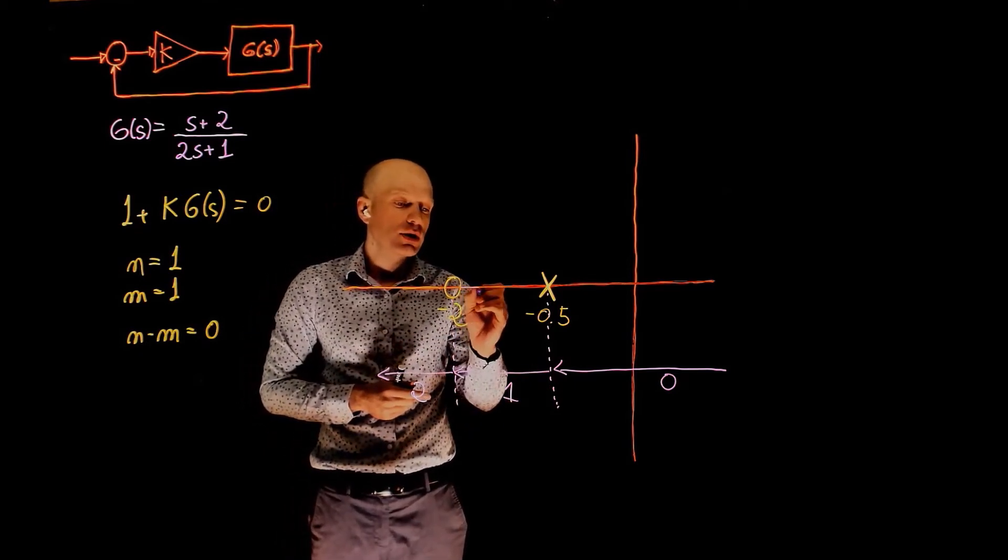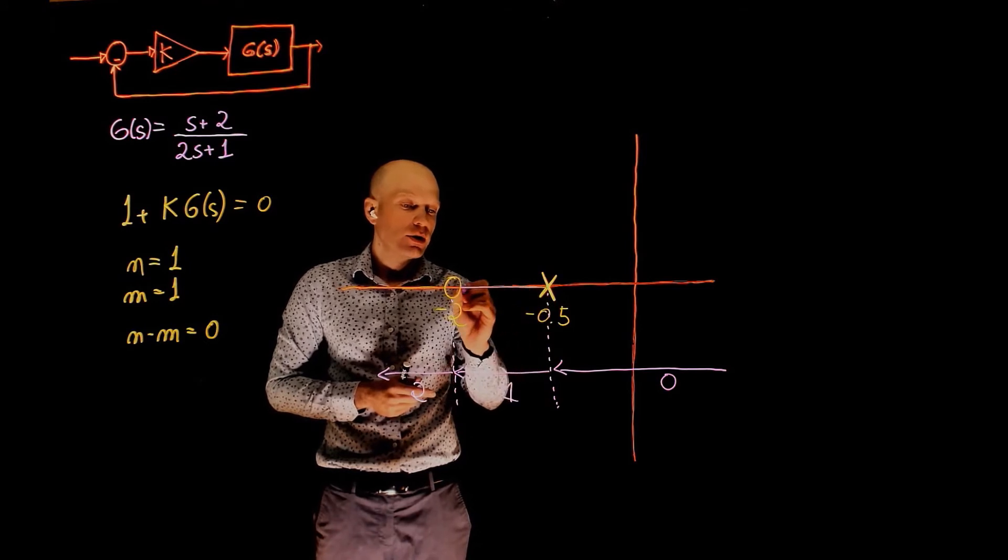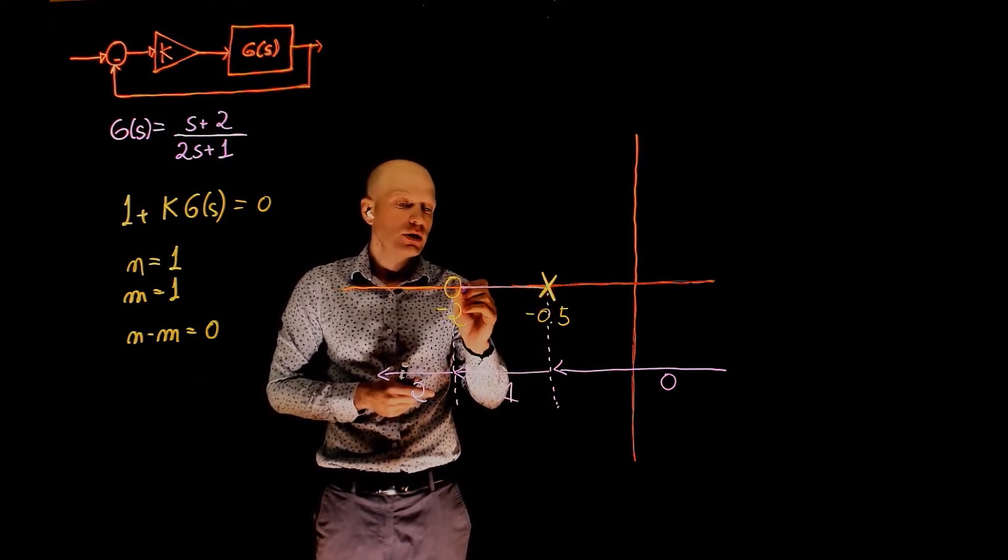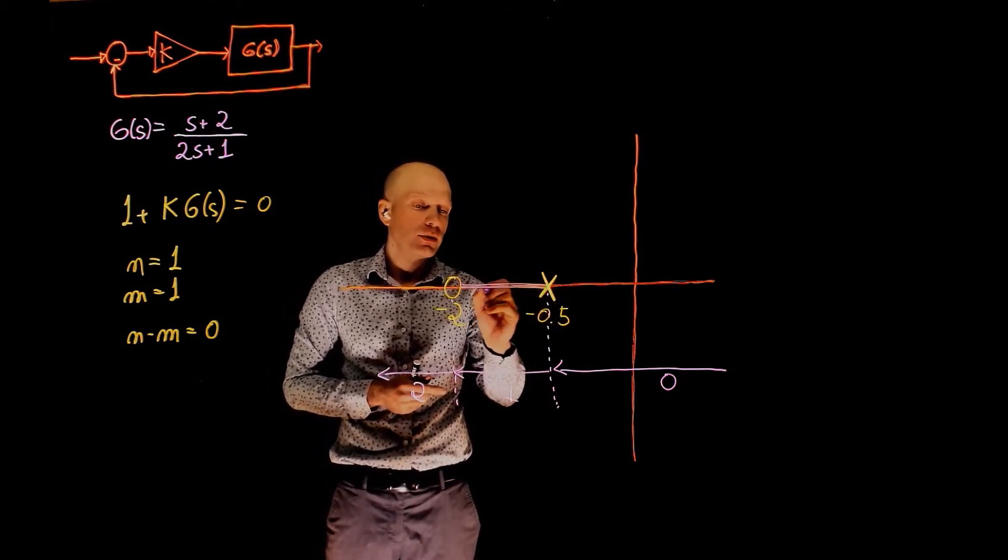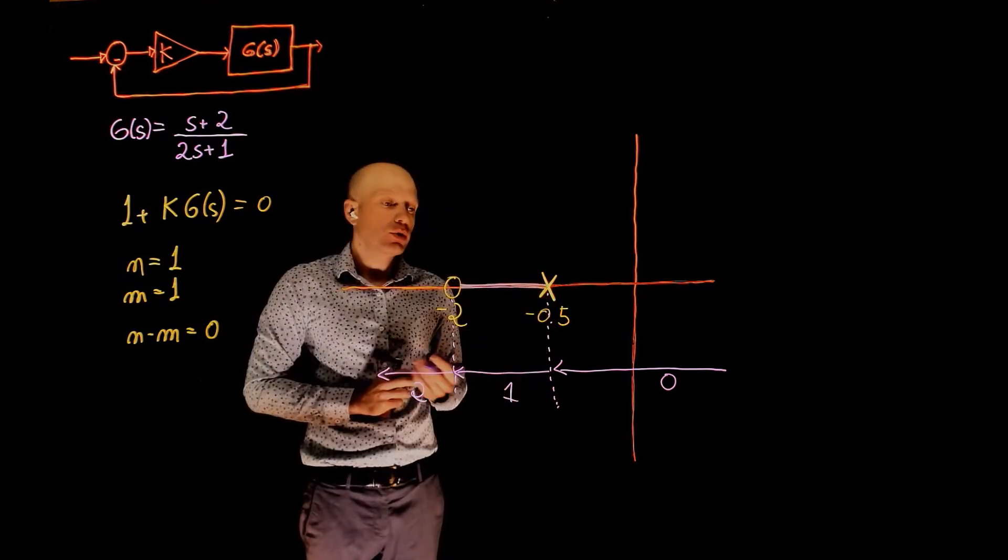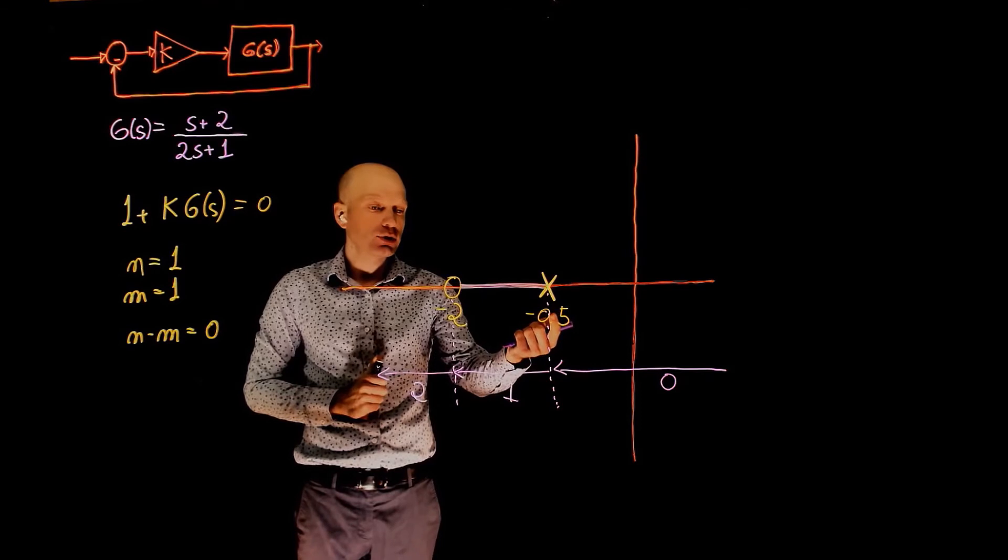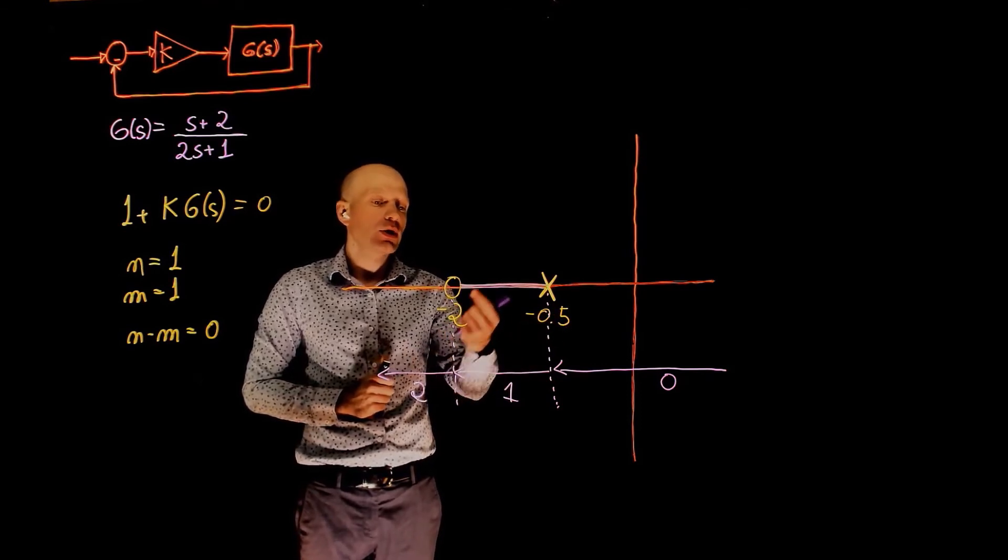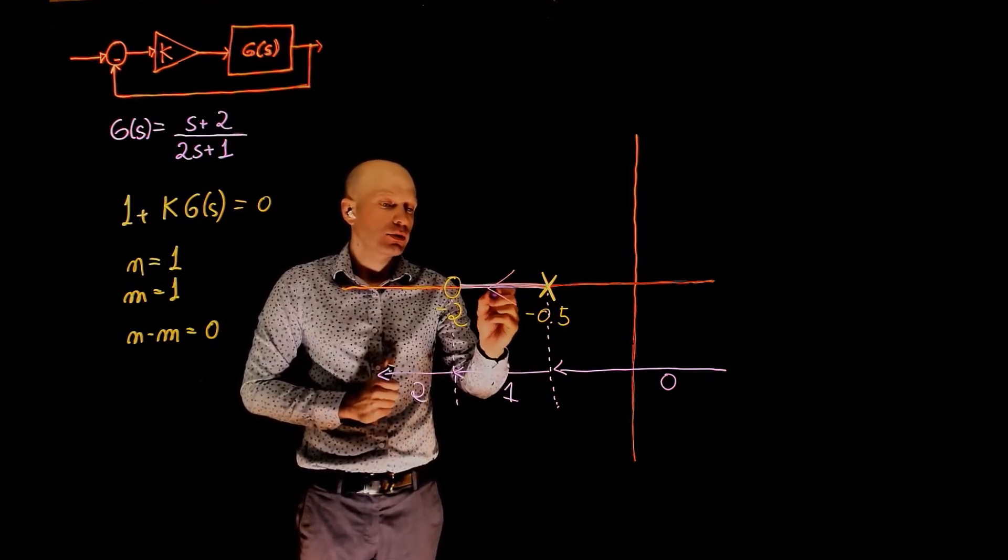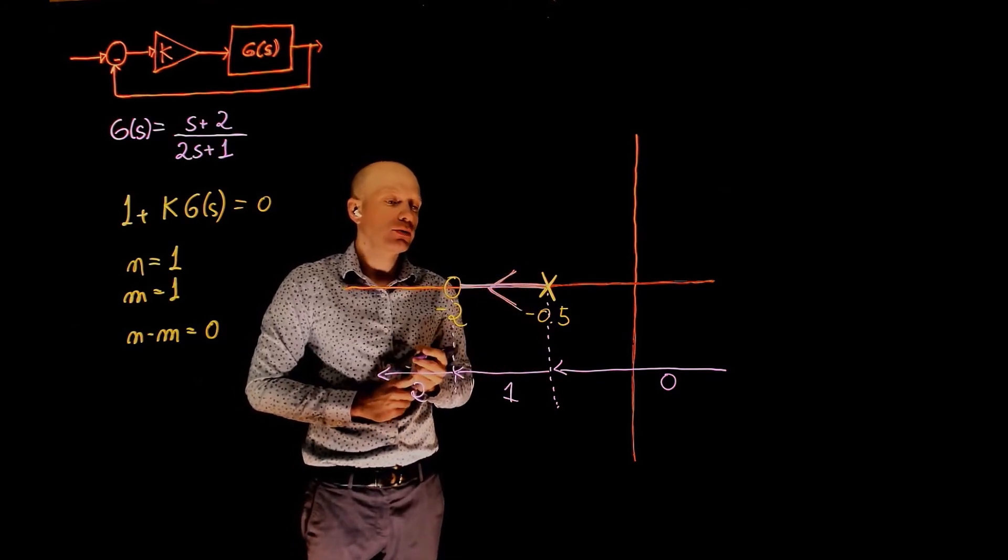You know now that the root locus exists between these two points. Here is the root locus. The poles will start at the location of the poles of the open loop transfer function and move towards the zeros of the open loop transfer function. So here we have now the direction of poles.